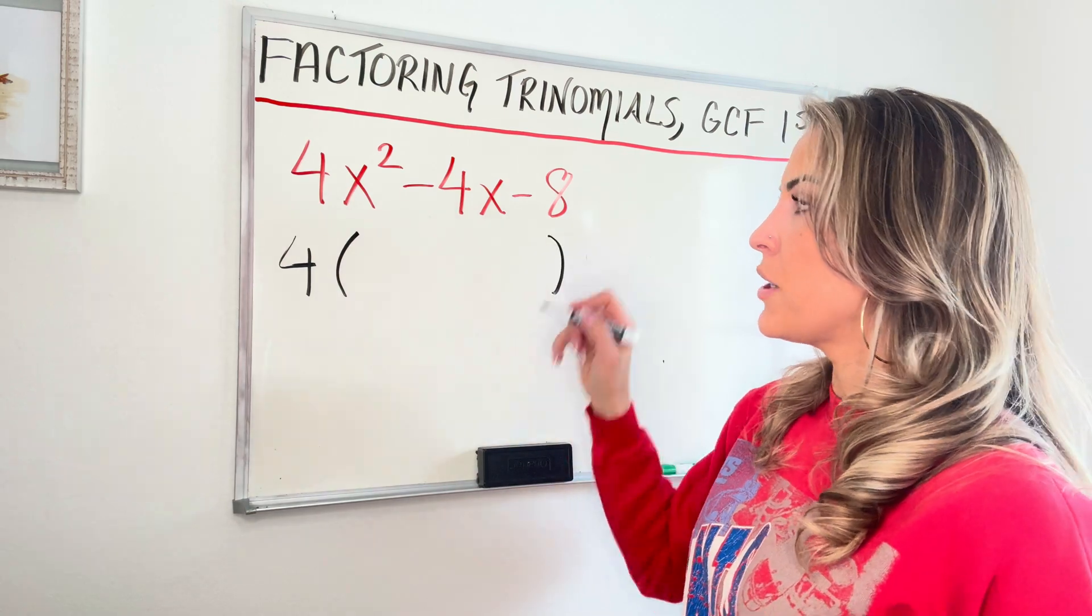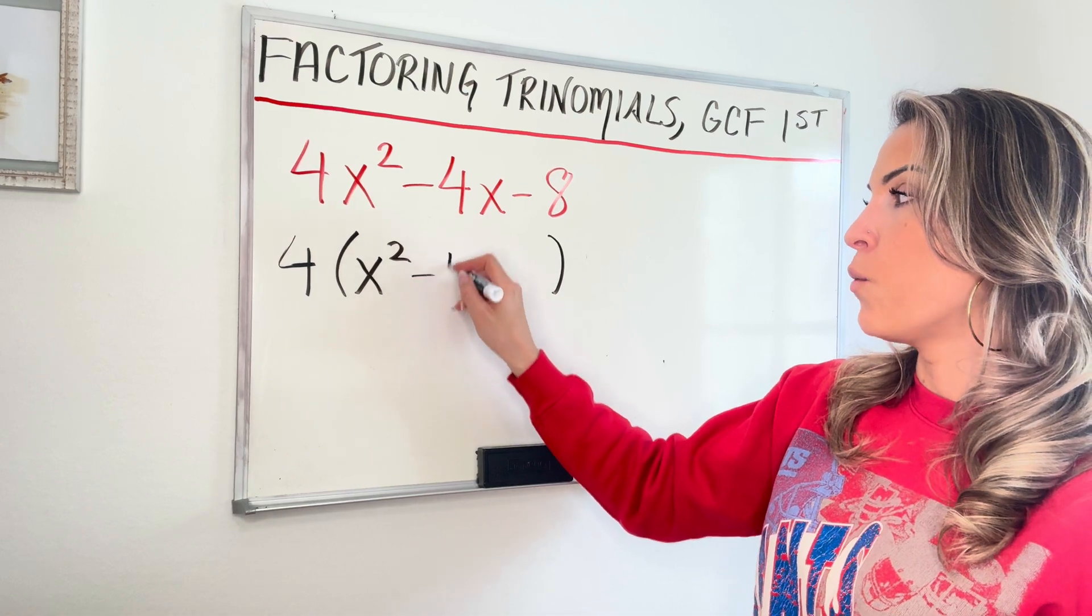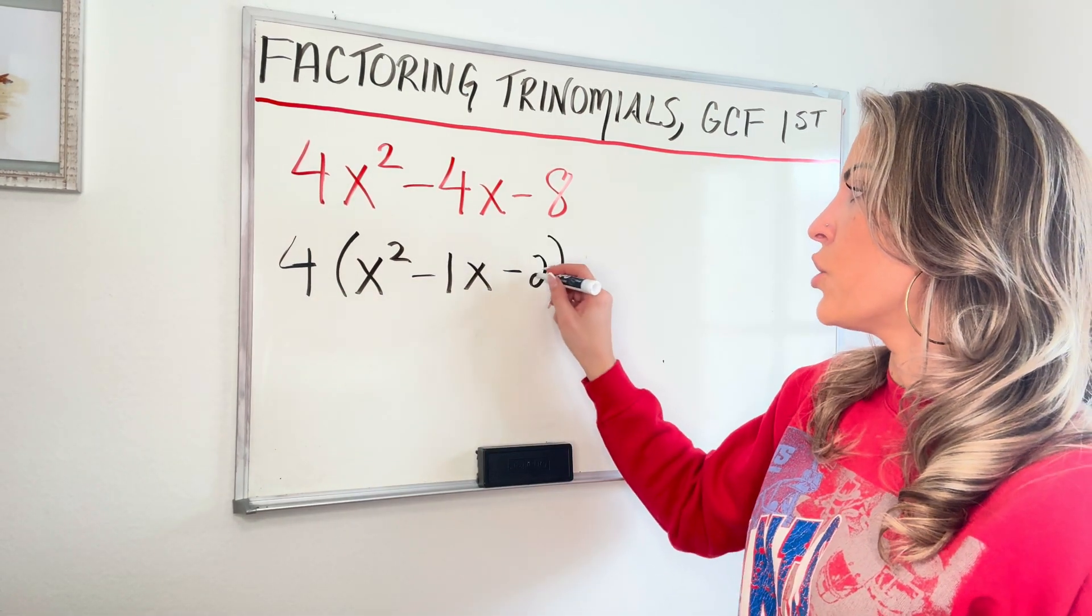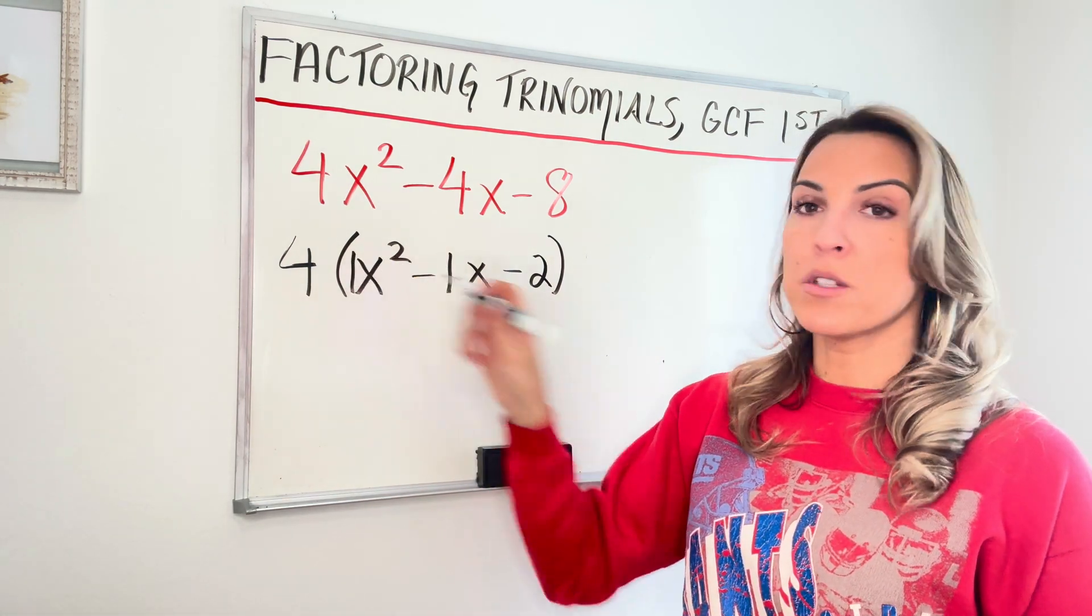When I factor out the GCF of four inside my parentheses, I'm going to have x squared minus one x or just minus x and minus two. Now I have a trinomial inside the parentheses where A is equal to one.